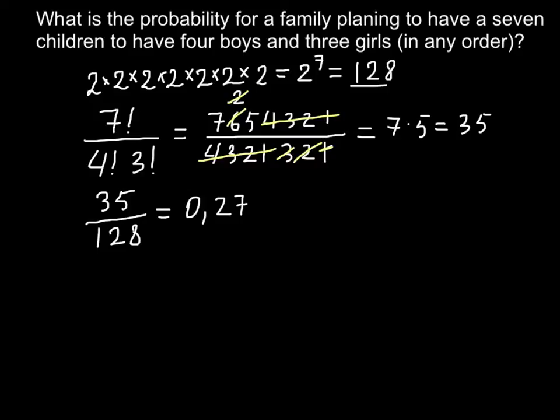There is also a different method where we don't have to find the total number of combinations separately. The formula would be slightly different: 7 factorial divided by 4 factorial times 3 factorial, multiplied by the number of combinations of boys.